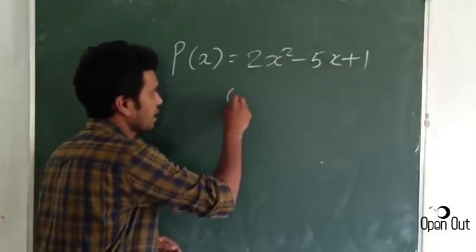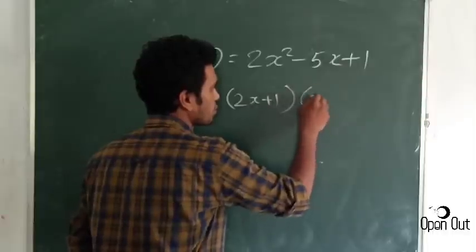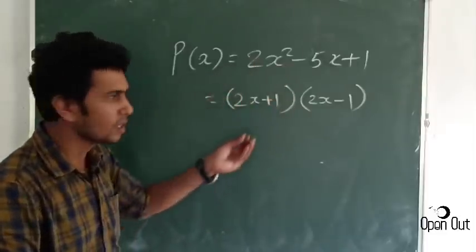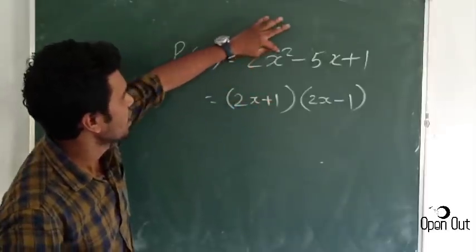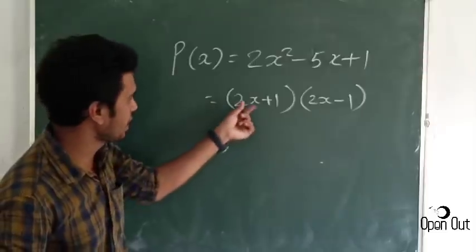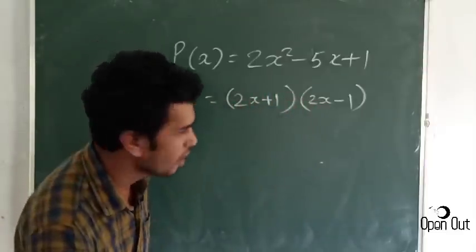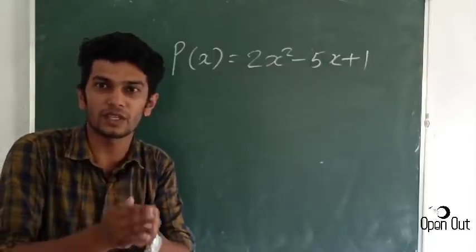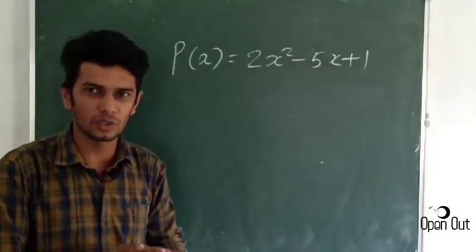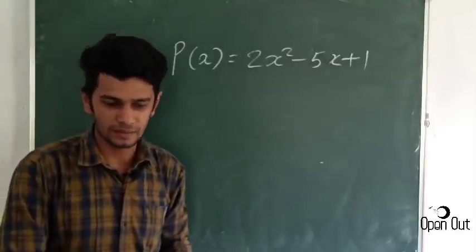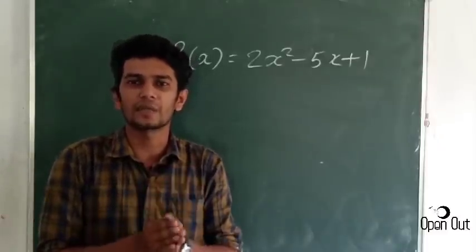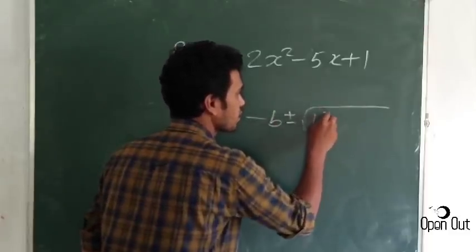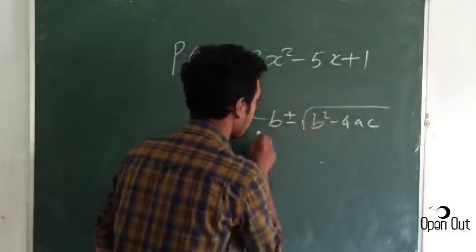Here we have 2x plus 1 into 2x minus 1. This is a product — x is the square. x is equal to minus b plus or minus root b squared minus 4ac divided by 2a. We have this equation — we know we have a problem, and this is not exactly how we used this equation.